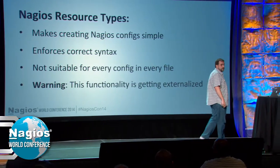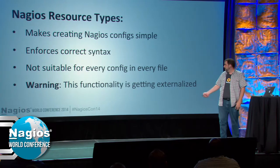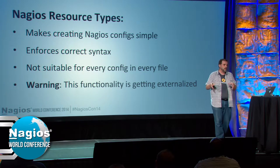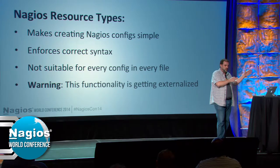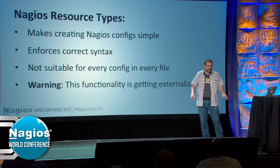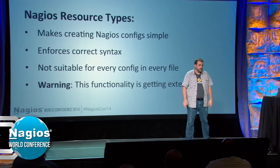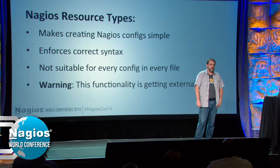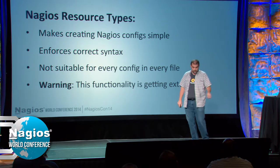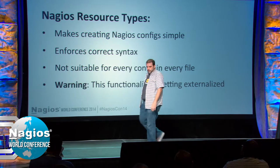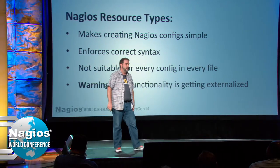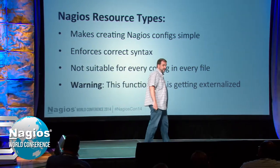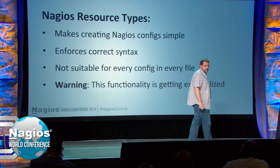Nagios resource types: Puppet has native support for these, though I hear this is going to be externalized — moved out of core Puppet into a loadable module, but still available. This makes creating Nagios config simple and enforces correct syntax because configs are programmatically generated. It's not suitable for every kind of config file, so for the method I'm outlining here I use a little bit of both. It's very handy especially for dynamic resources that might be coming and going.